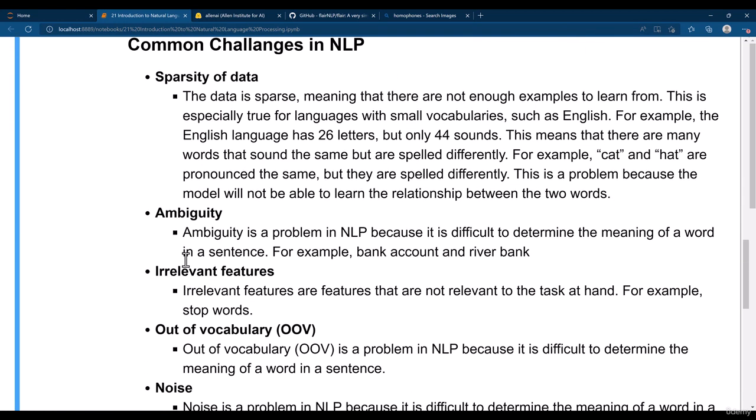Other than that, we have ambiguity. Ambiguity is a problem in NLP because it is difficult to determine the meaning of a word in a sentence. For example, you have bank account and river bank.